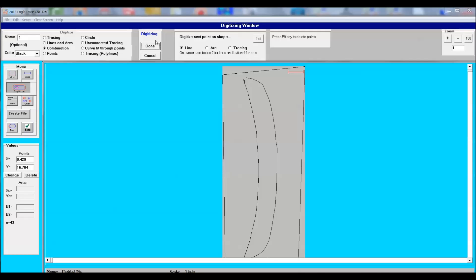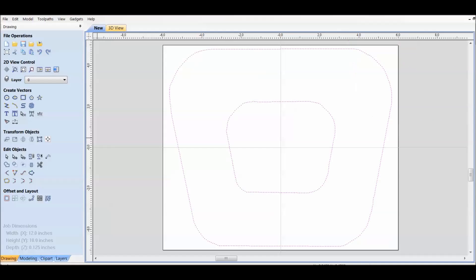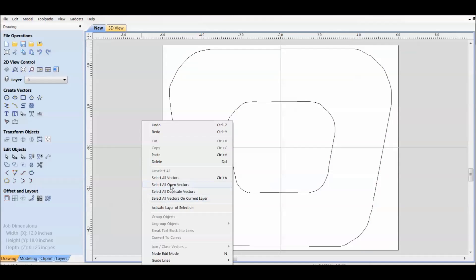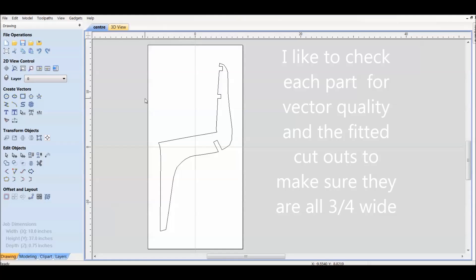Save your file frequently, or files. Here I put all the parts into a node edit program. I checked all the vector qualities, make sure they're all closed, and I did those notch joint checks.